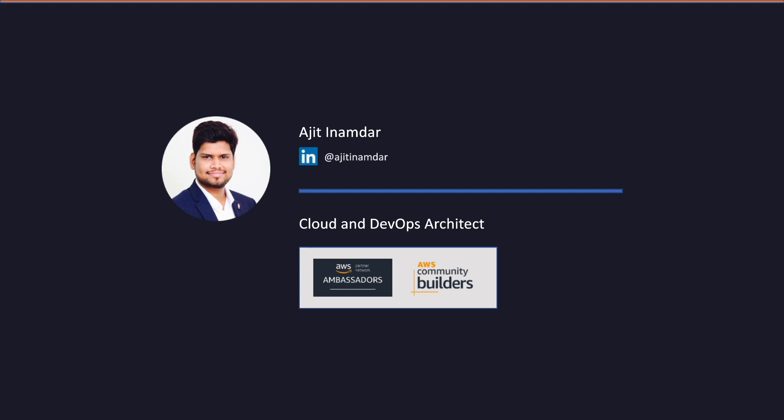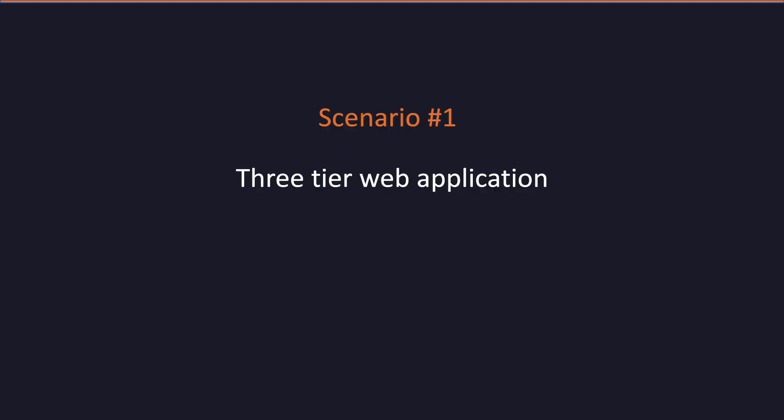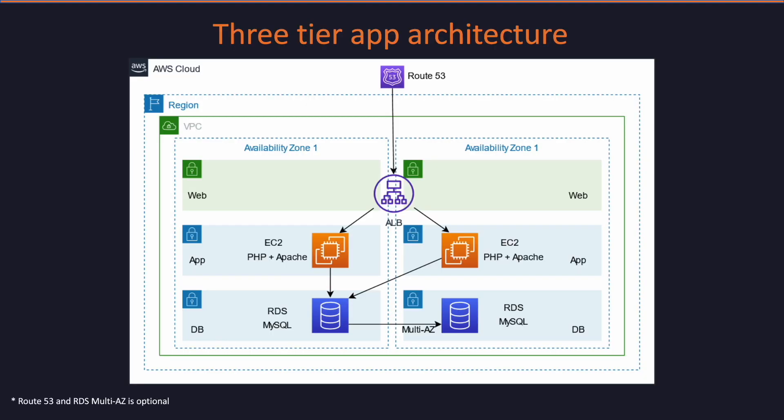So without wasting much time, let's head on to the scenarios. Scenario number one would be deploying a three-tier architecture in AWS. This is how the architecture would look like — it is a typical three-tier architecture that we have traditionally followed in both on-premises as well as cloud infrastructure.